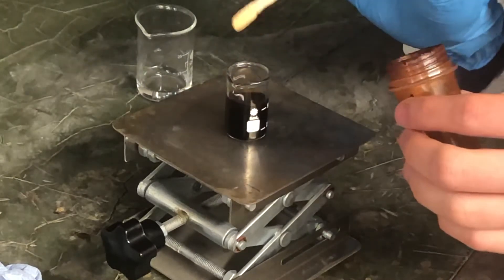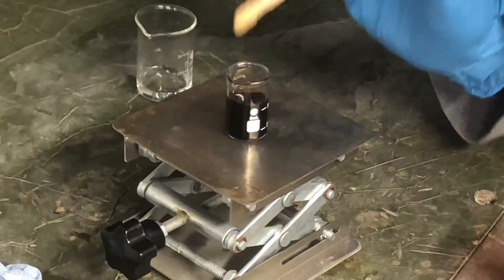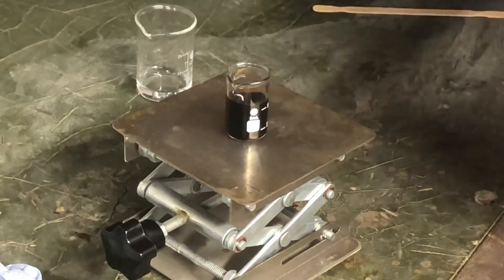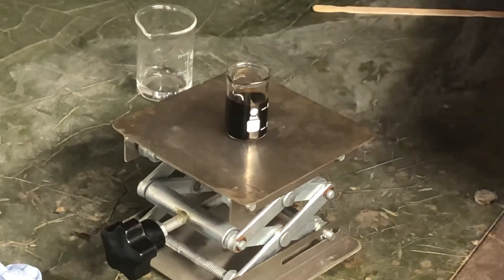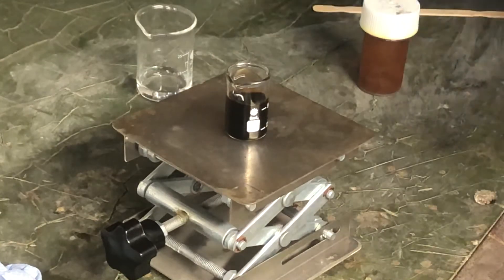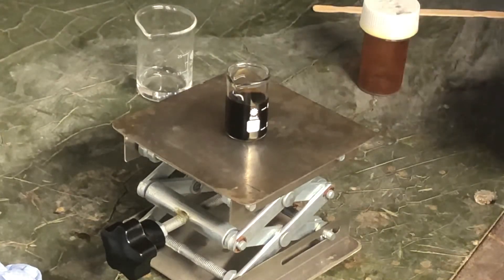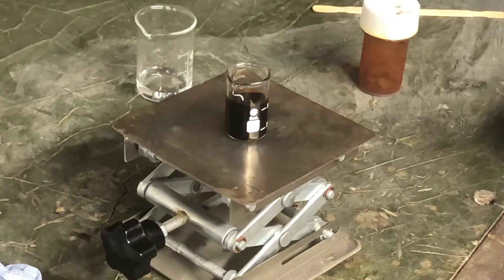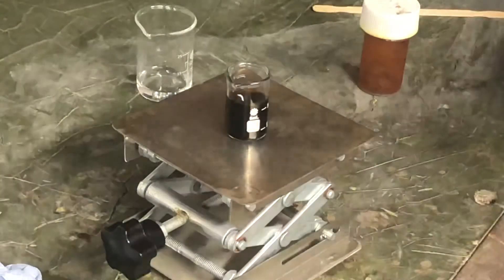So this is forming our iodoacetone, but as a side product, it forms hydroiodic acid, HI, the iodine equivalent of hydrochloric acid, which is actually a controlled substance in the United States, which is surprising.